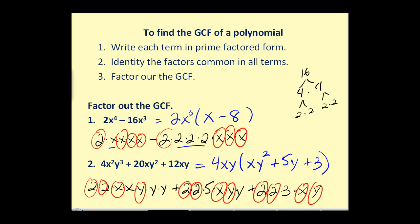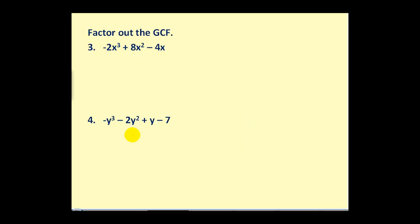Let's go ahead and take a look at two more. Now, what we'll notice about these two expressions is the leading coefficient is negative. In general, when the leading coefficient is negative, we factor out a negative greatest common factor. So, let's go ahead and start by writing this in prime factored form.